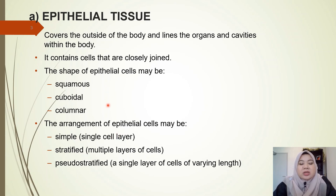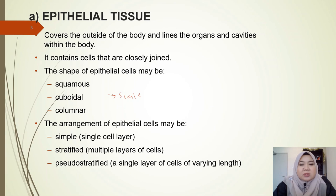Now we're going to look at the shape first. We have three shapes of epithelial cells. The first one is squamous. Squamous actually came from the word 'scale', which means the structure of these epithelial cells are usually wide and flat.